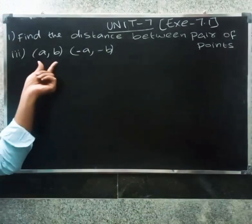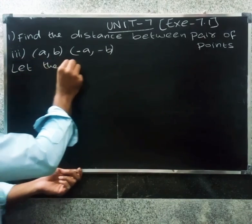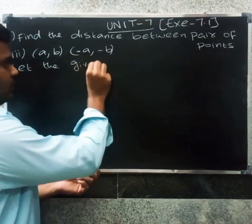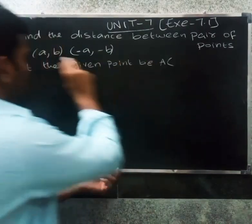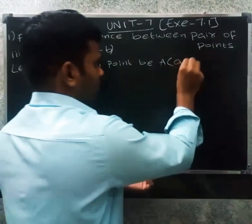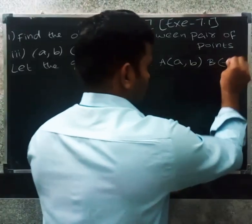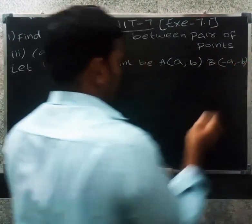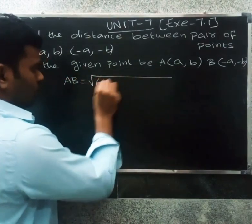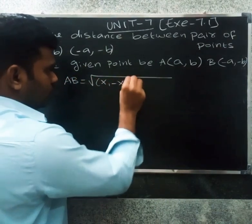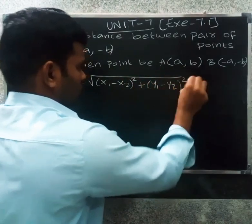Third question: find the distance between the points (a, b) and (−a, −b). Let the given points be A(a, b) and B(−a, −b). The distance formula is: AB = √[(x1 − x2)² + (y1 − y2)²]. Here x1 = a, y1 = b, x2 = −a, y2 = −b.